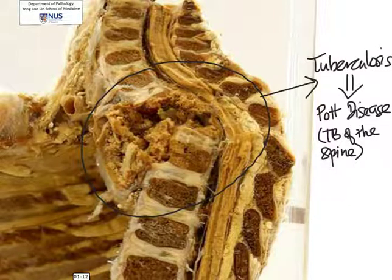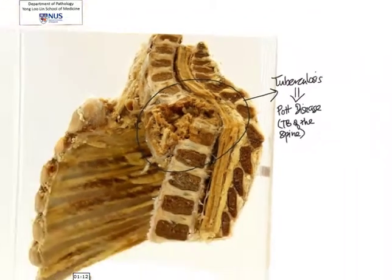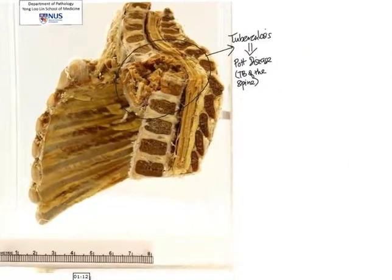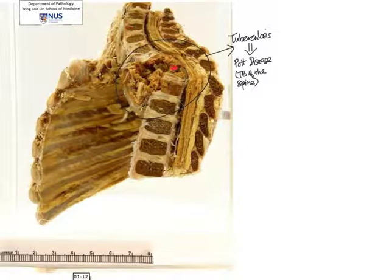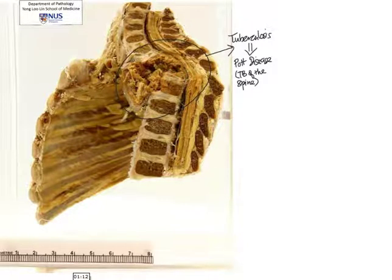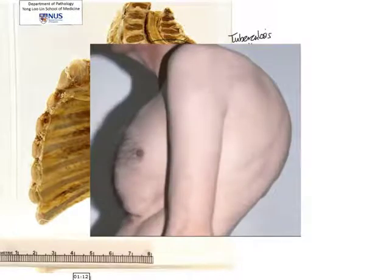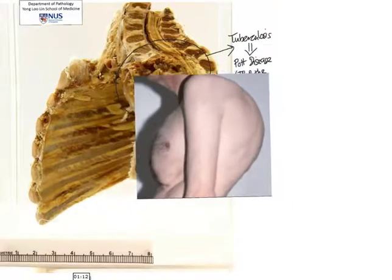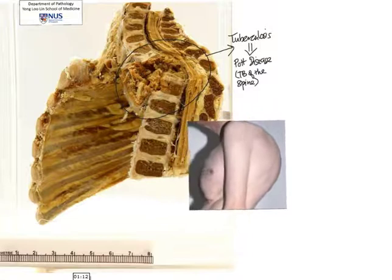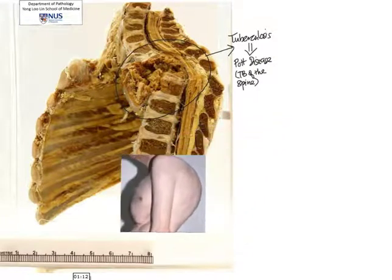Let's think about how this patient may present. Because there is an obvious deformity of the spine, the patient would present similarly. Clinically, there would be a kyphosis, meaning that the patient would be very hunched, and the patient would also be shortened because of that. Here is a picture showing how the patient may actually look — you can see the marked deformity, which is probably in the proximal thoracic spine.